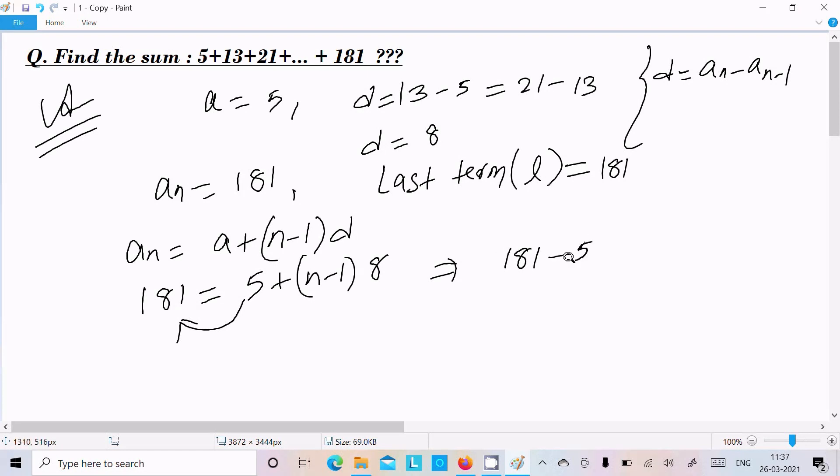Now here, after this, I am going to move on the left: 181 minus 5 equals (n-1) times 8. Now here, after the next is 181 minus 5 equals 176 equals (n-1) times 8.